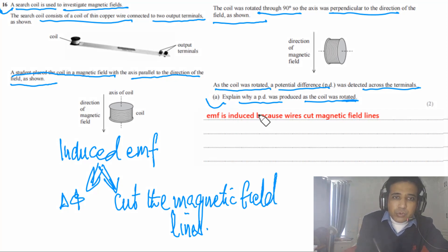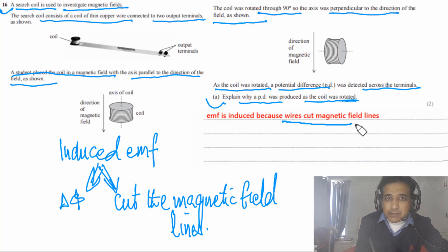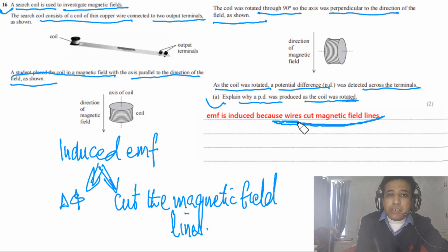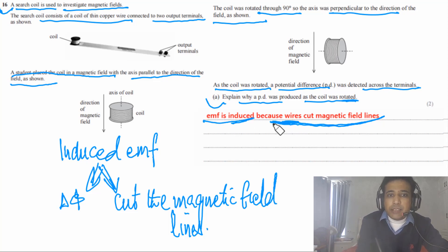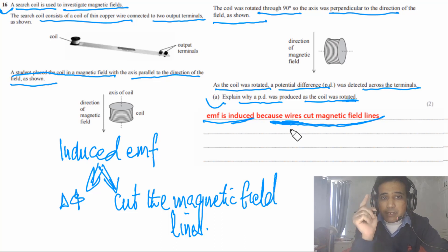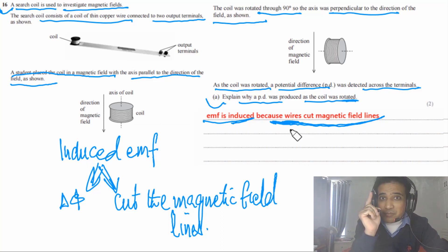If you write down that EMF is induced, you get one mark. But you must also state the reason: you need to state that EMF is induced, then explain it is because the wires cut the magnetic field lines. That is the basic concept of electromagnetic induction.